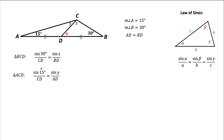Now we're going to divide the first equation by the second equation. Notice that both left sides have the length CD — it's going to cancel out when we divide. On the right side, one equation has BD, another has AD, but BD equals AD, so those cancel out too. This gives us: sine of 30 degrees divided by sine of 15 degrees equals sine Z over sine Y.